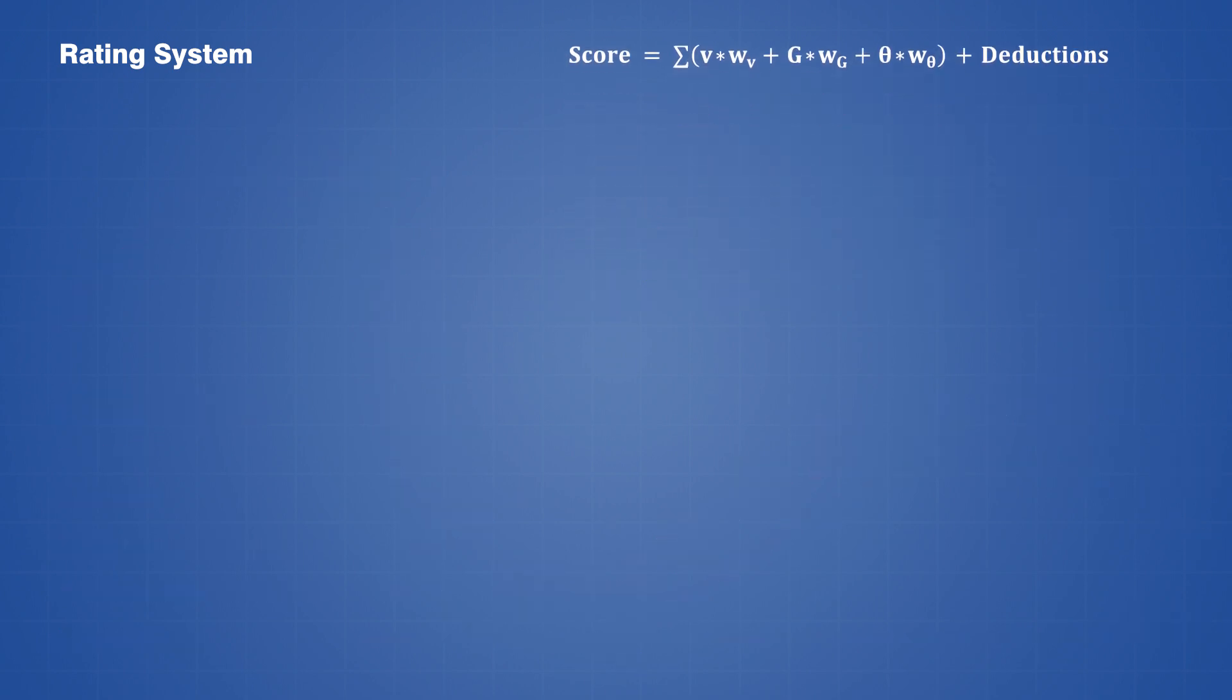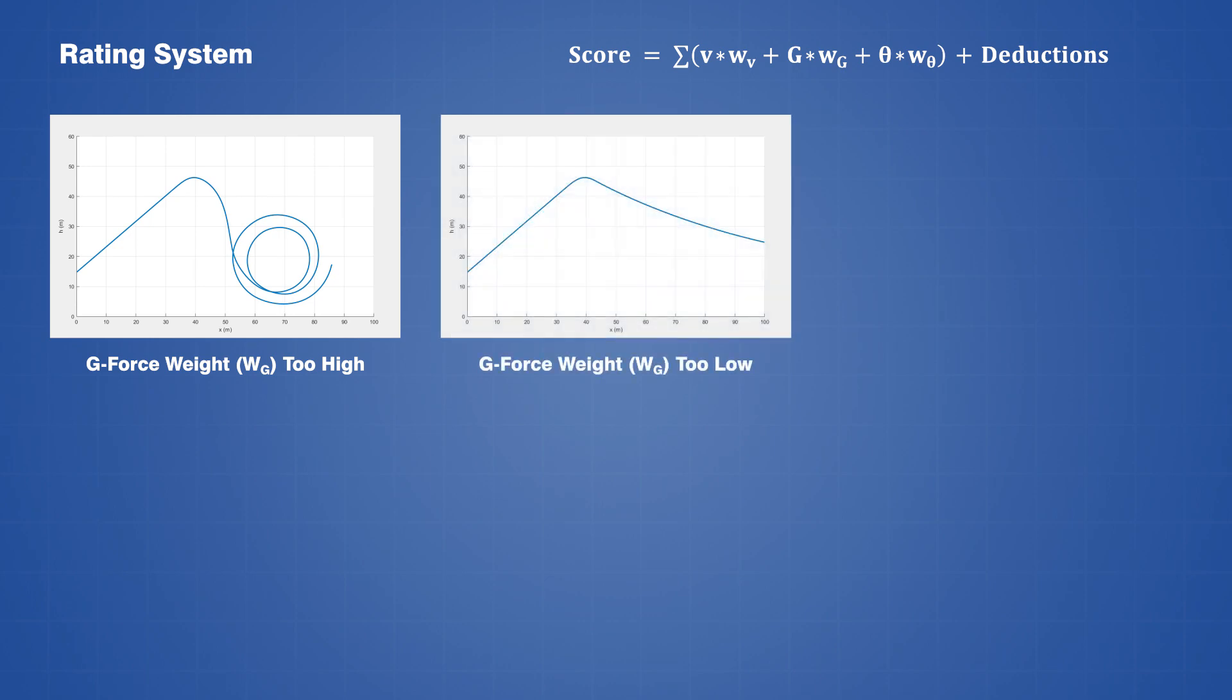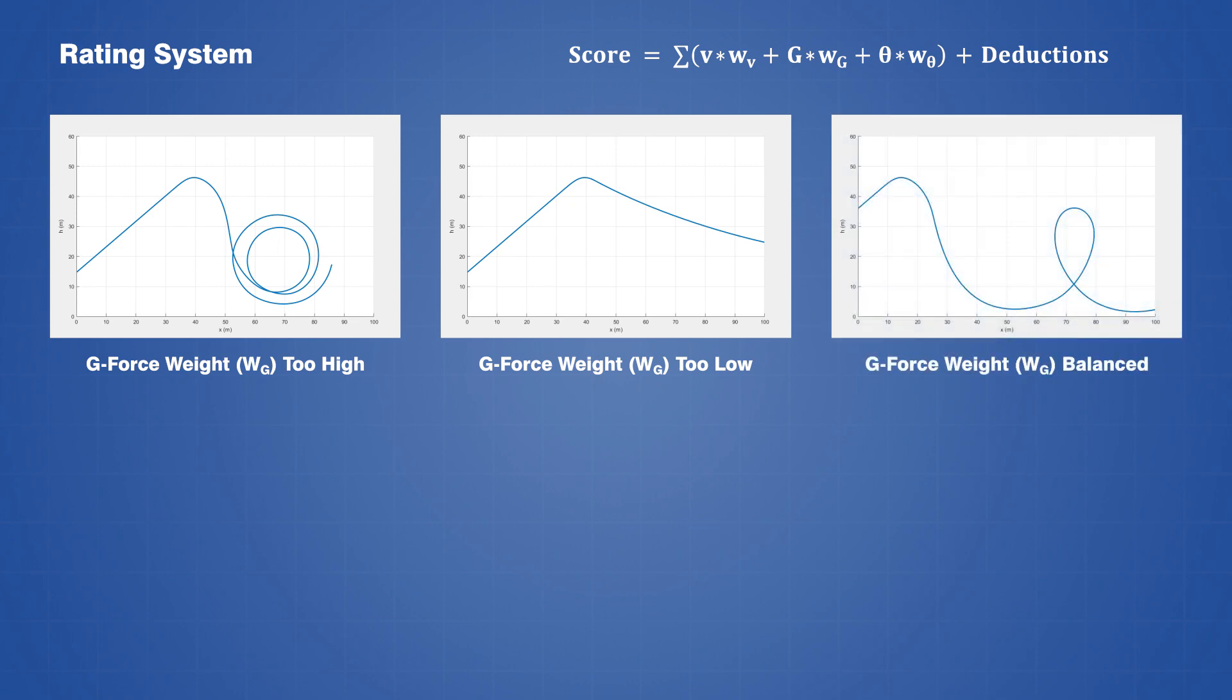If one of the parameters is weighted too high, then the AI will learn to maximize that parameter only while ignoring all the other constraints, and if a parameter is weighted too low, then the AI will simply ignore it. In order to get the best results, the initial weights need to be set up so that each parameter has a nearly equal contribution to the total score, and small adjustments can then be made to control how the AI learns.